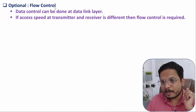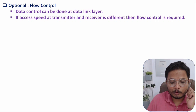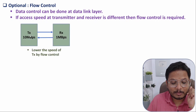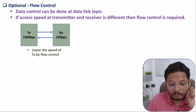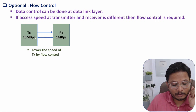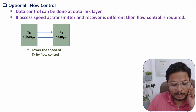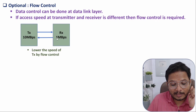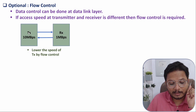An optional task is flow control. Flow control means the speed of communication between transmitter and receiver should be well managed. For example, if the transmitter is transmitting at 10 Mbps but the receiver can only handle 1 Mbps, the receiver tells the transmitter to lower the speed. Conversely, if the receiver can manage 100 Mbps but the transmitter is only sending at 10 Mbps, the receiver tells the transmitter to increase speed.